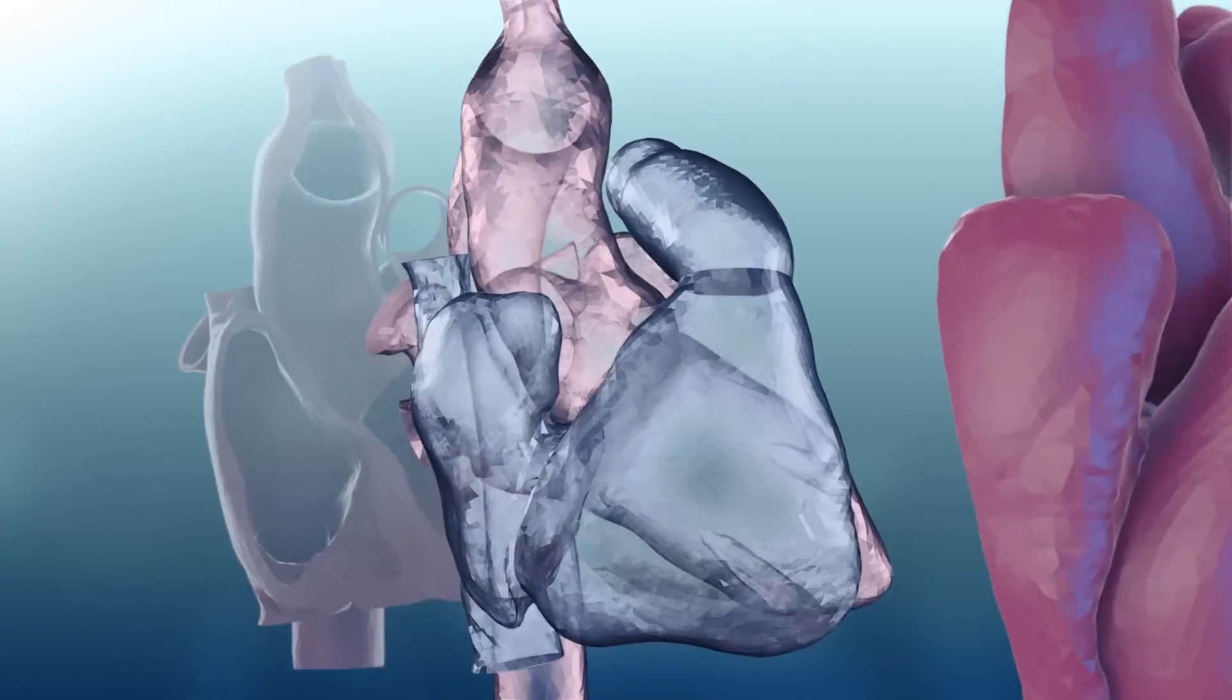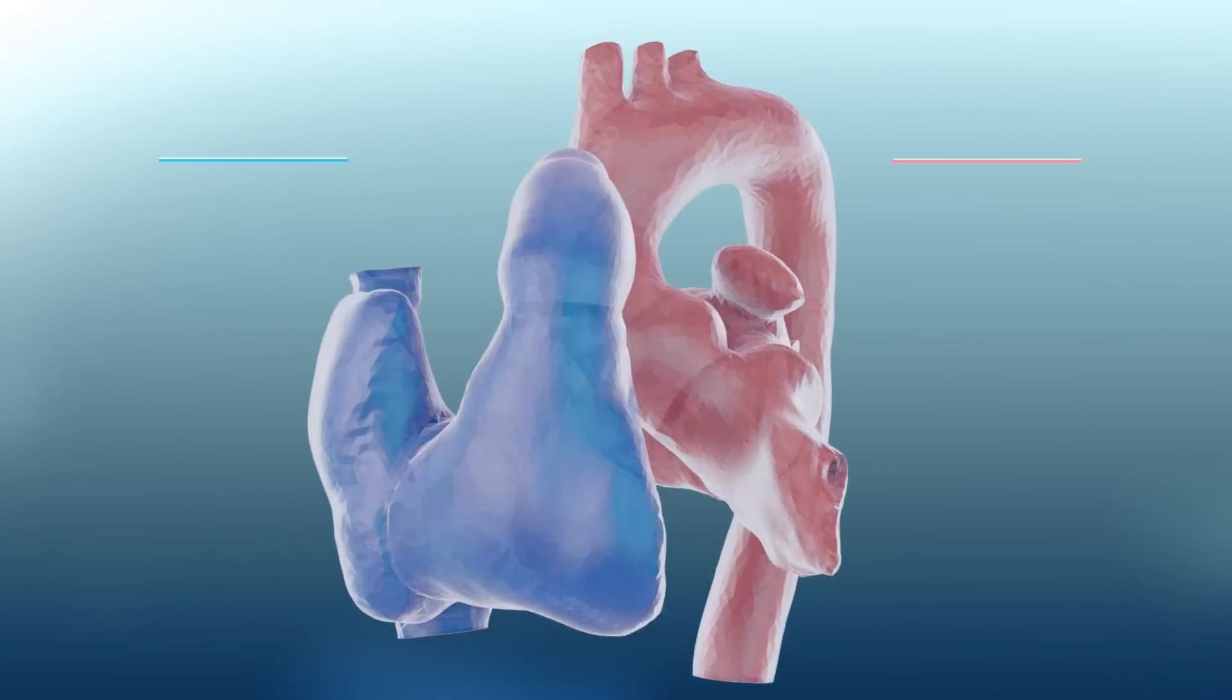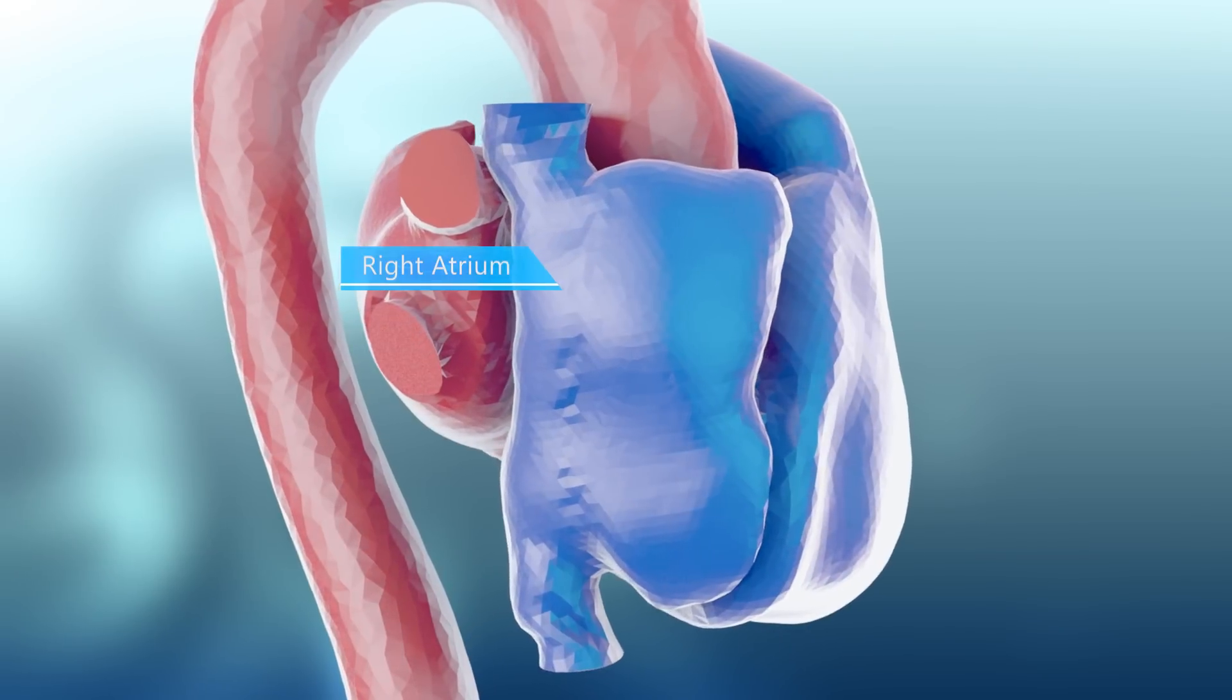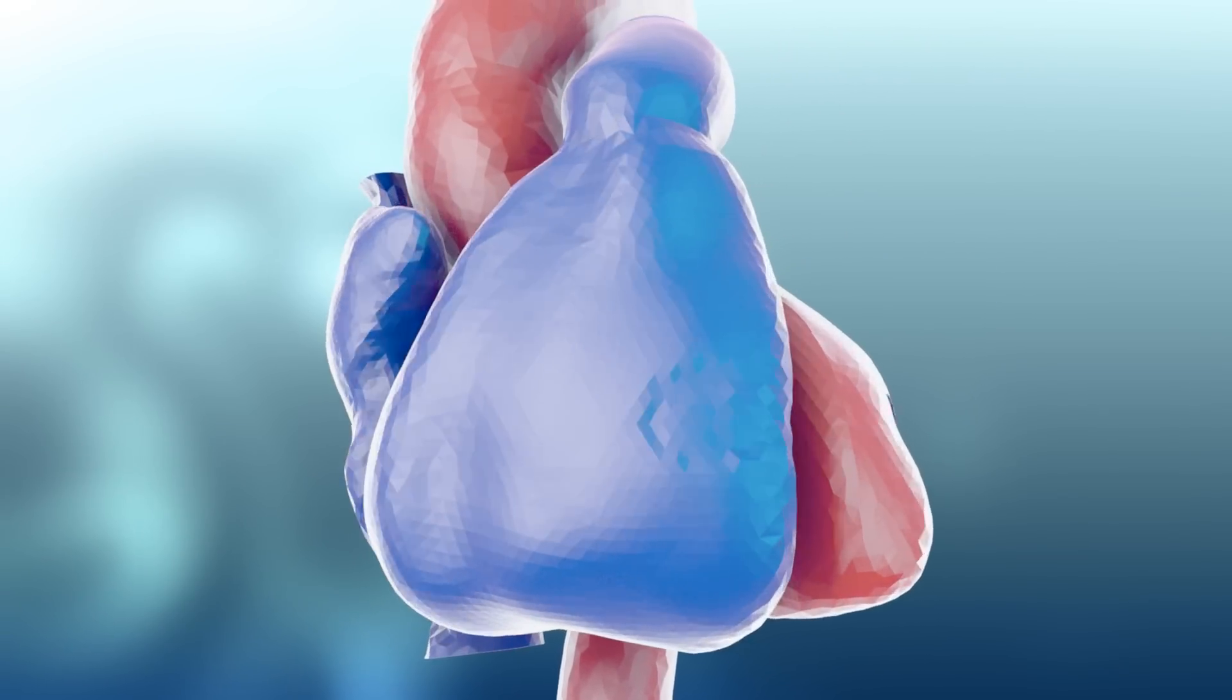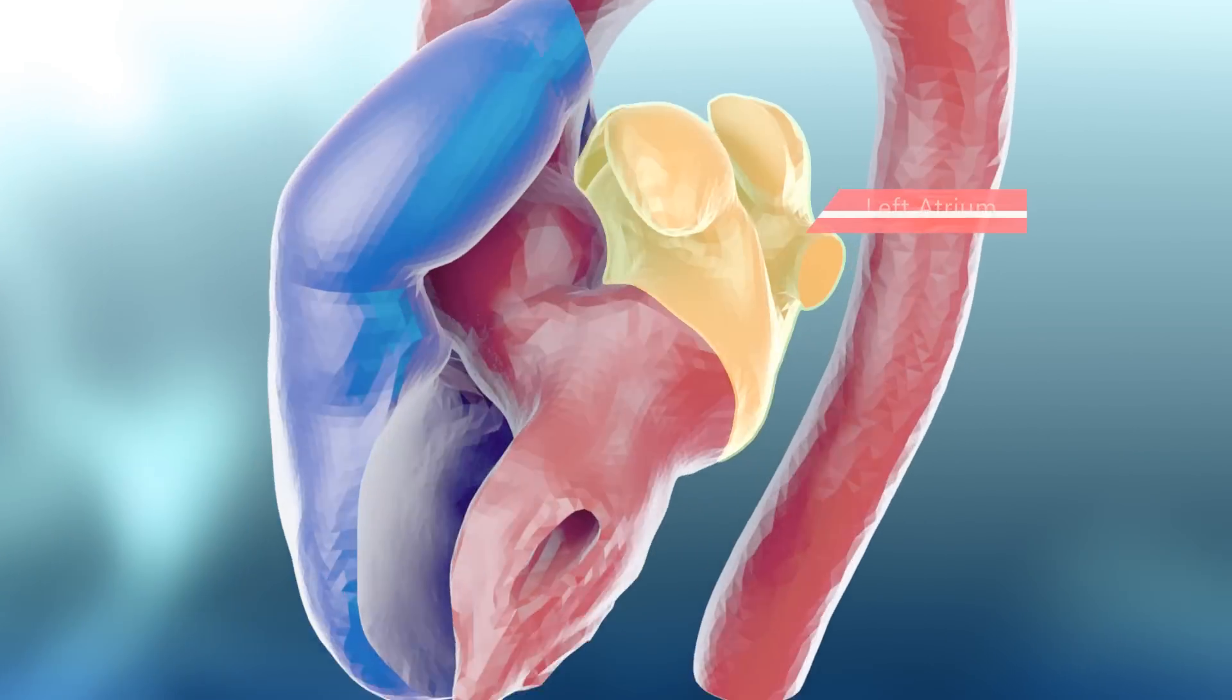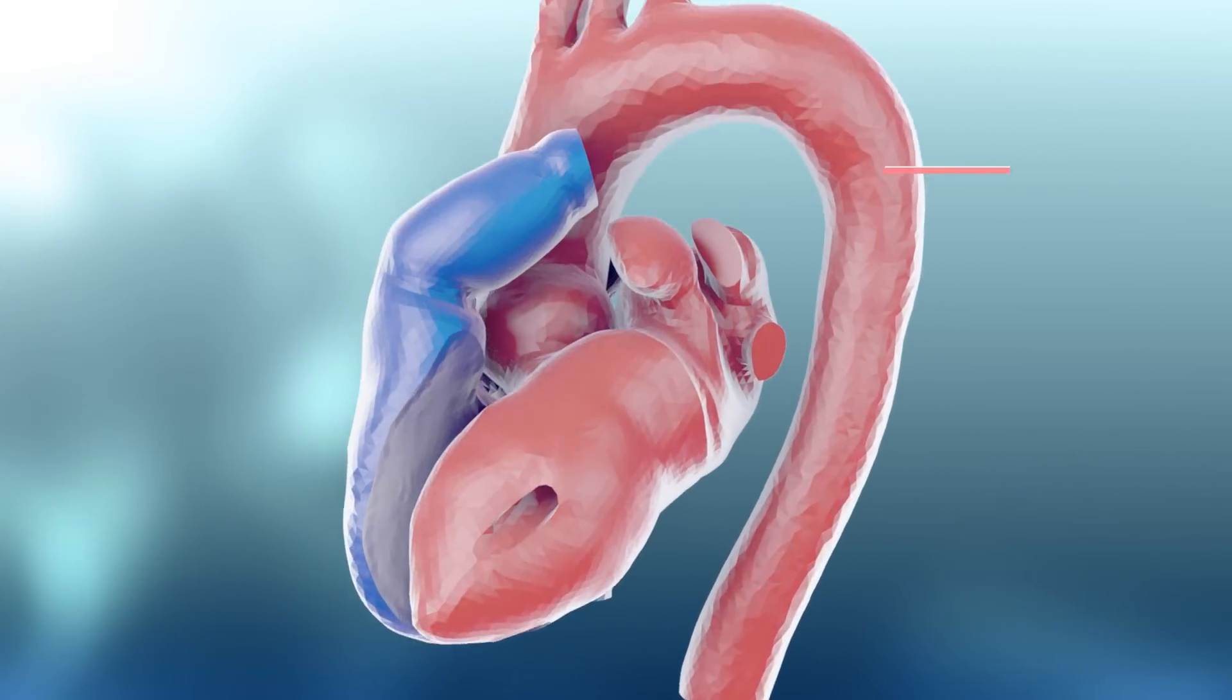Now, let's look at the heart's inner structure. The heart is composed of the right heart and the left heart. The right heart is made up of the right atrium and the right ventricle and connects to the pulmonary artery. While the left heart is made up of the left atrium and the left ventricle and connects to the aorta.